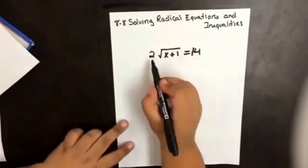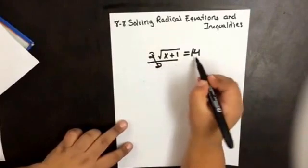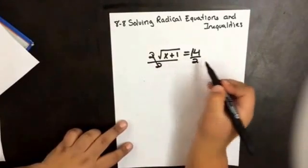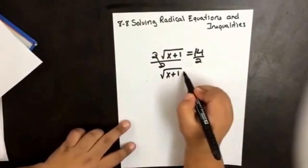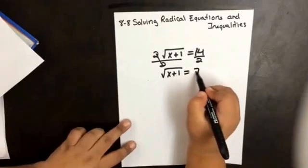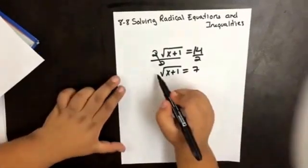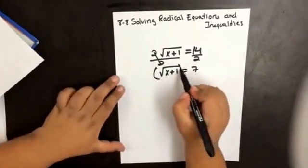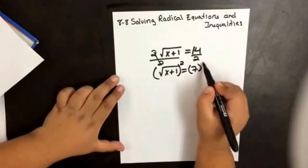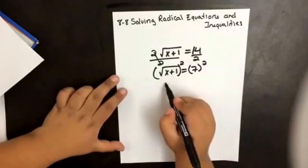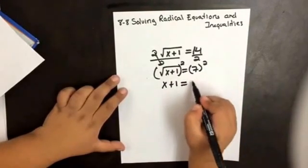the first thing we want to do is divide by 2. So then the square root of x plus 1 equals 7. Now we want to square both sides to get rid of the radical. So x plus 1 equals 49.